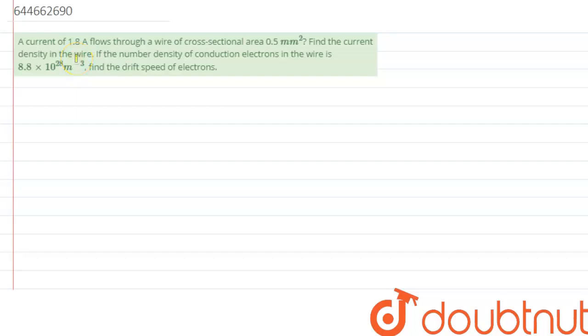Hello everyone, so we are given with a question which says a current of 1.8 ampere flows through a wire of cross-sectional area 0.5 mm square.